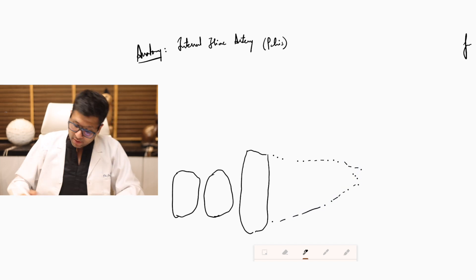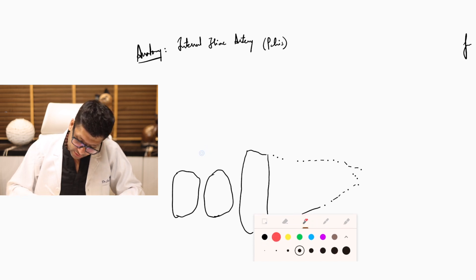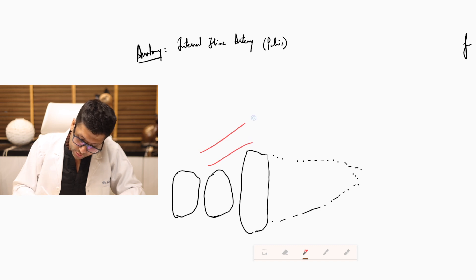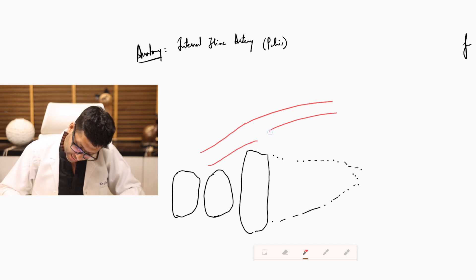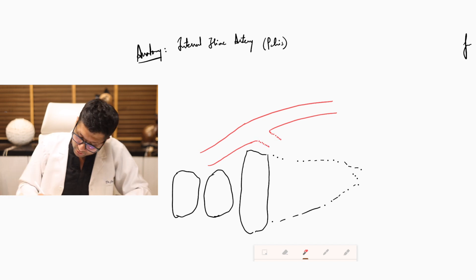It is important for us to understand that the common iliac is going to continue as the external iliac, and just below the sacral promontory it will branch to form a vessel which goes into the depth of the pelvis.